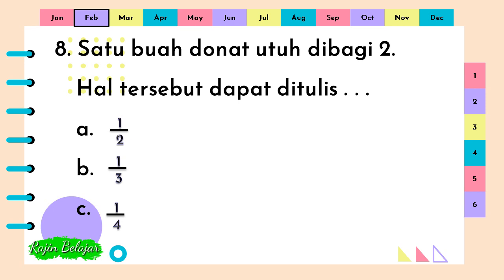Satu buah donat utuh dibagi dua. Hal tersebut dapat ditulis titik-titik-titik. A. Satu per dua. B. Satu per tiga. C. Satu per empat. Jawaban yang benar adalah A. Satu per dua.